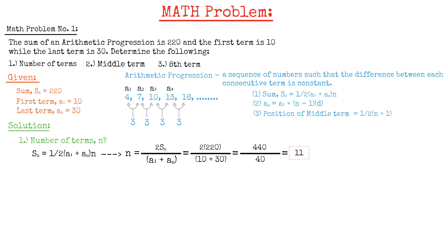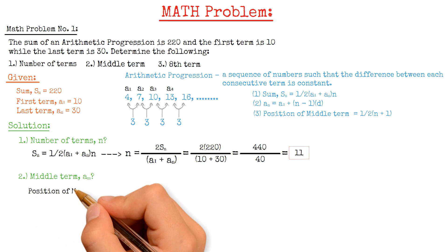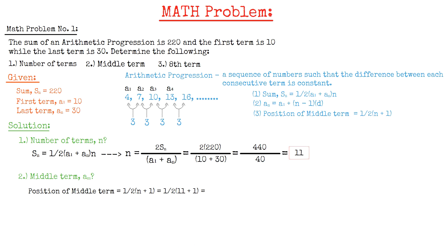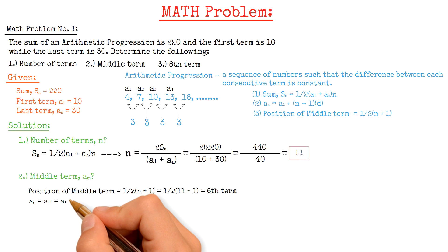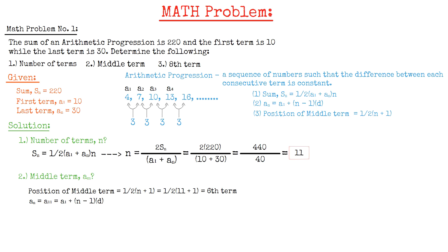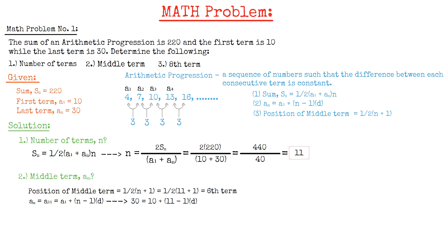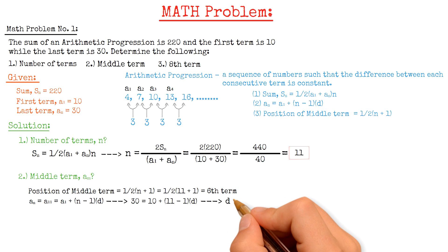Moving on to the next question, that is to find the middle term, am. First, we need to find the middle term position, which equals one-half multiplied by (n plus 1), giving us one-half of (11 plus 1), which equals 6. That means the middle term am is at the 6th term. To calculate the common difference d, using the formula An equals A1 plus (n minus 1) times d, we have 30 equals 10 plus (11 minus 1) times d, giving us a common difference d of 2.